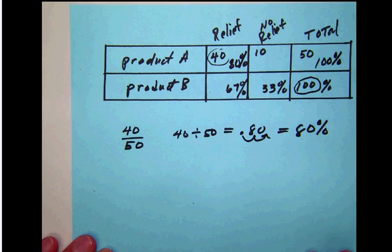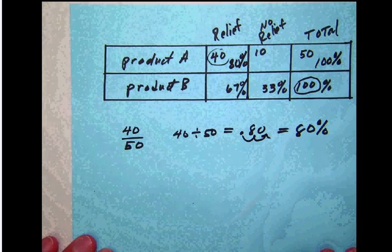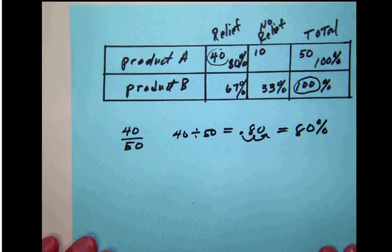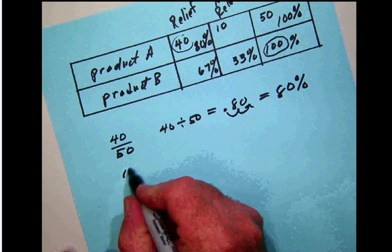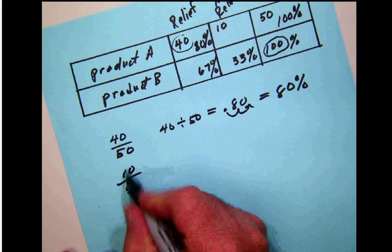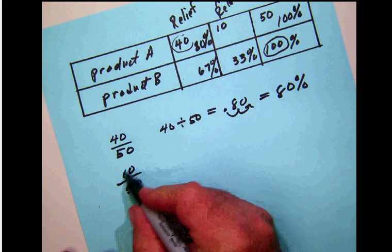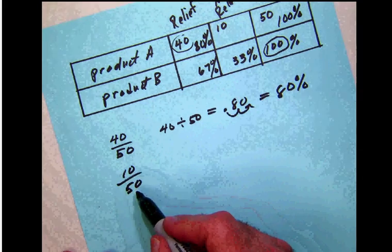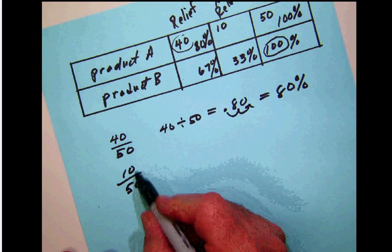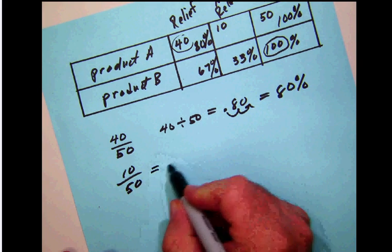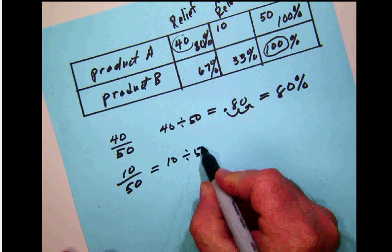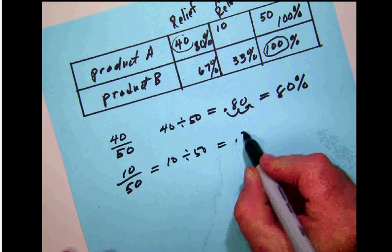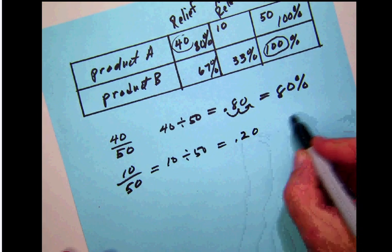Now to get the ones who didn't find relief, you could do that two ways. One way would be simply to take the 50 total, put the 10 who didn't get relief over that—10 over 50 would give us 10 divided by 50, or 0.2, which turns out to be 20%.